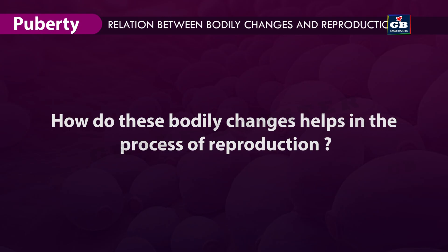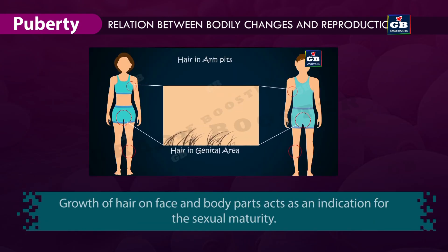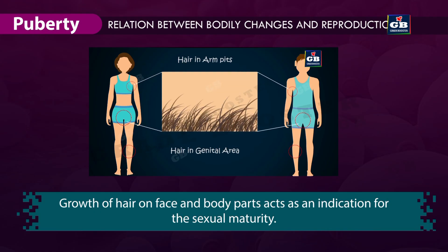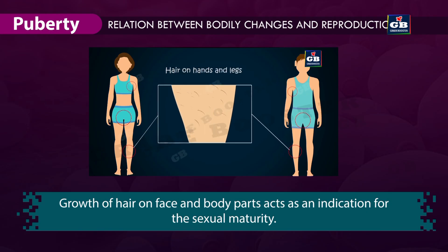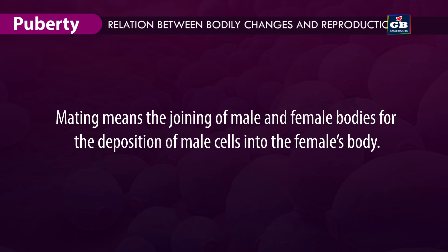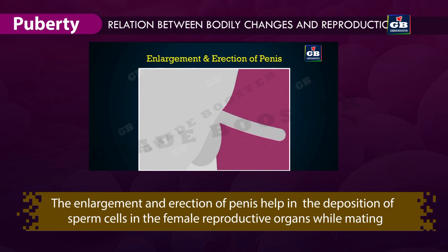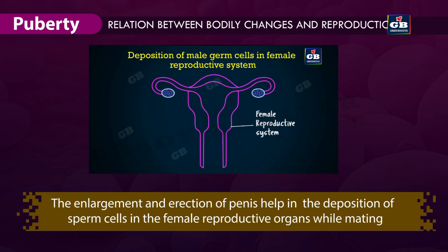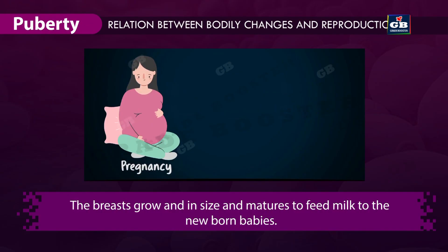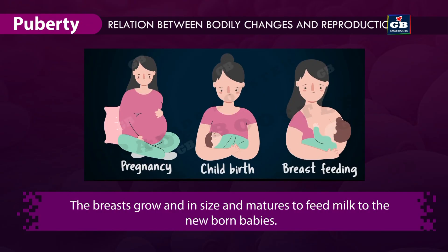How do these bodily changes help in the process of reproduction? Growth of hair on face and body parts acts as an indication of sexual maturity — a sexually matured animal identifies another for mating with the help of these indications. Mating means the joining of male and female bodies for the deposition of male cells into the female's body. The enlargement and erection of the penis helps in the deposition of sperm cells in the female reproductive organs during mating. The hips of females become wider to facilitate pregnancy and delivery of the baby. The breasts grow in size and mature to feed milk to newborn babies.